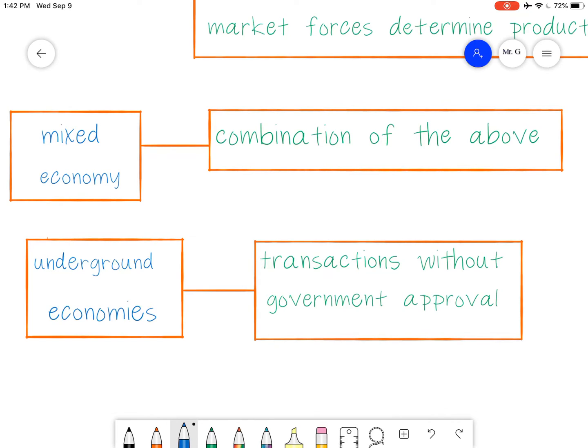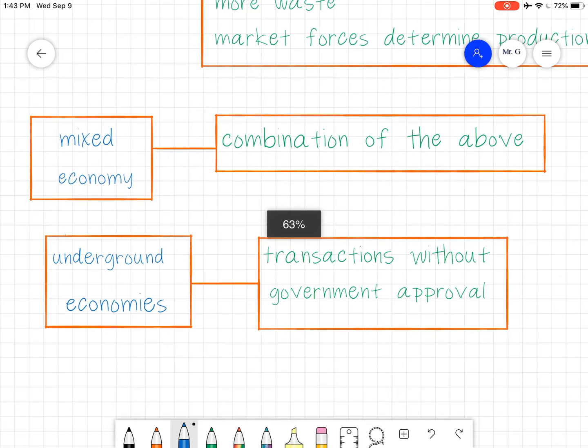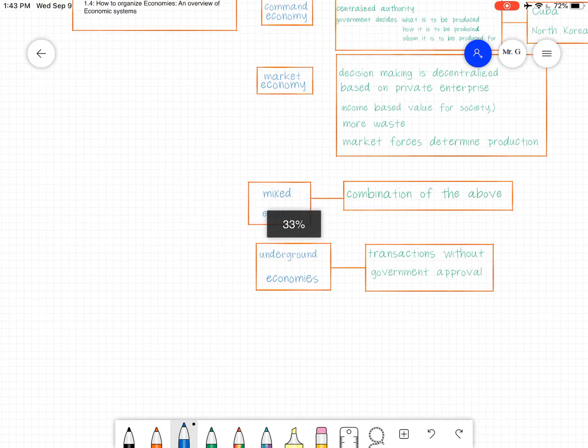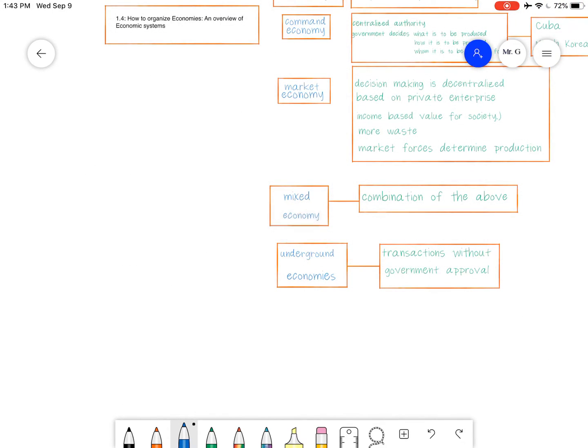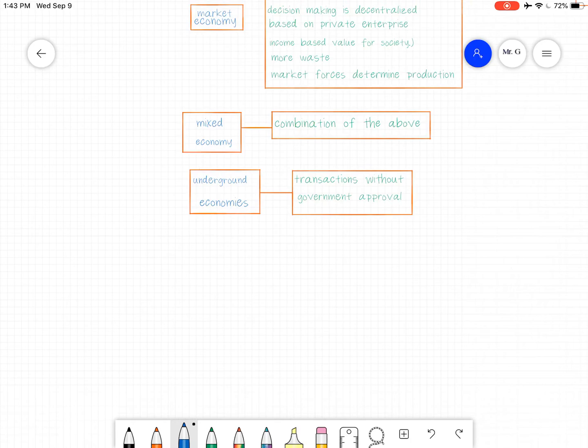Underground economy are where transactions without government approval are occurring. Especially in command economies where you have limited goods, someone might offer you another product that you can't get anywhere else, and then they work out a deal. That's the underground economy. These different economies essentially are ways of defining and looking at economic systems.